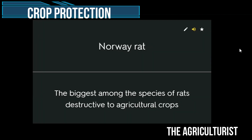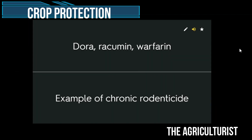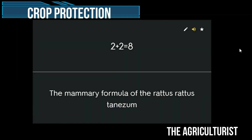Norway rat — the biggest among the species of rats destructive to agricultural crops. Dora racumen warfarin — example of chronic rodenticide. 2+2=8: the memory formula of the Rattus rattus tanezumi.